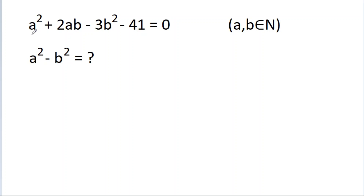In this video, we are given that a² + 2ab - 3b² - 41 = 0, where a and b belong to natural numbers, and we have to find the value of a² - b². We have only one equation and two variables a and b.